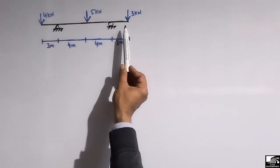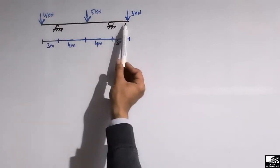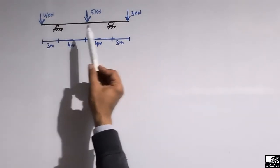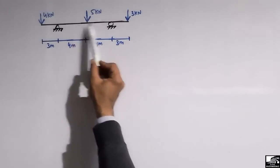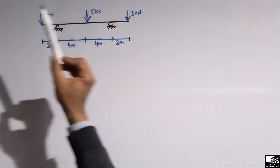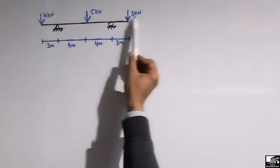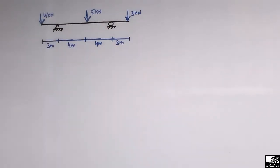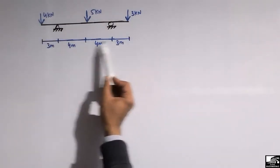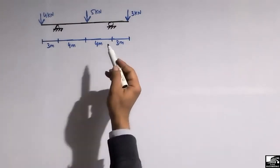This overhanging beam is loaded with three different concentrated loads. Two loads are acting at the two ends of this beam and one point load is acting at the center of this beam. The magnitudes of the loads are 4, 5, and 3 kilonewtons, and all the dimensions of the beam are given.